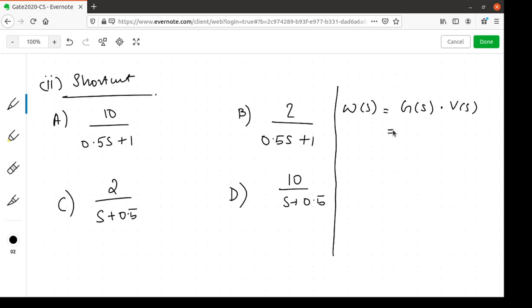This g of s is one of these four and v of s will be 5 by s. The final value of omega of s is given to be 10, so we will apply the final value theorem here. Limit s tending to 0, s omega of s equals 10.